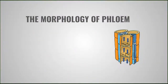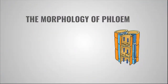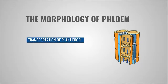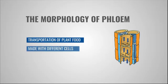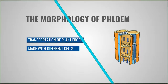Now let's talk about the phloem tissues. The main function of phloem is to carry and transport the organic food made by leaves to the entire body of the plant. Like xylem, phloem is also made up of different cells.